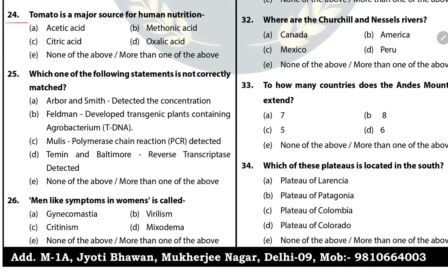Question 24: Tomato is a major source of which nutrient for human nutrition? The answer is C — Citric Acid. Question 25: Which one of the following statements is not correctly matched? The answer is more than one of the above — all are correctly matched.